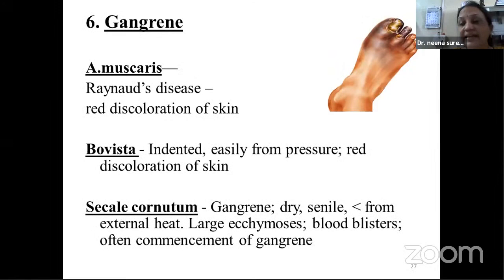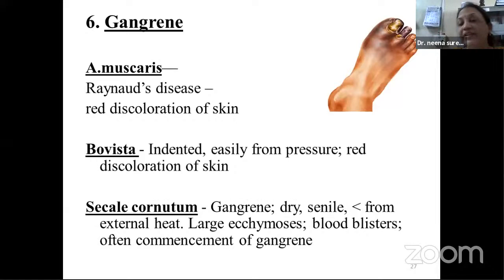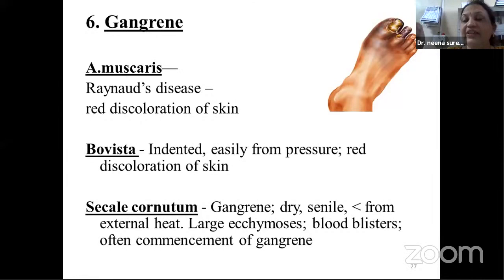Sixth characteristic feature: gangrenous affection. Number one medicine is Secale cornutum — gangrene with dryness, aggravation from external heat, large ecchymosis, blood blisters, and commencement of gangrene. Agaricus muscaris has indication in Raynaud's disease with red discoloration of the skin. Bovista shows deep impression, especially from knife and other instruments, with red discoloration of the skin.